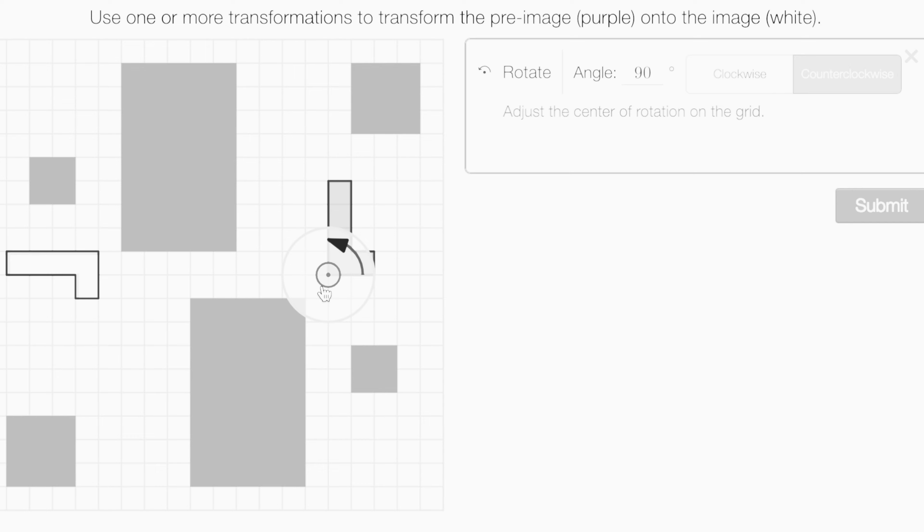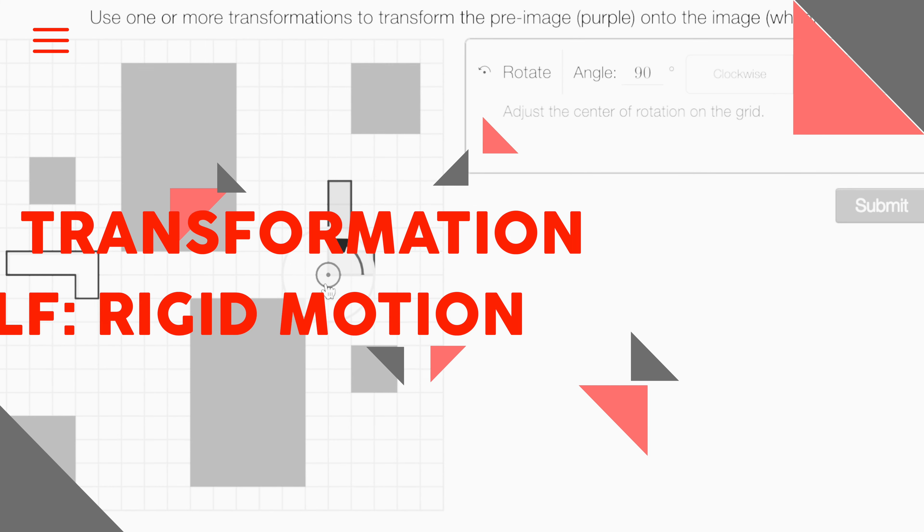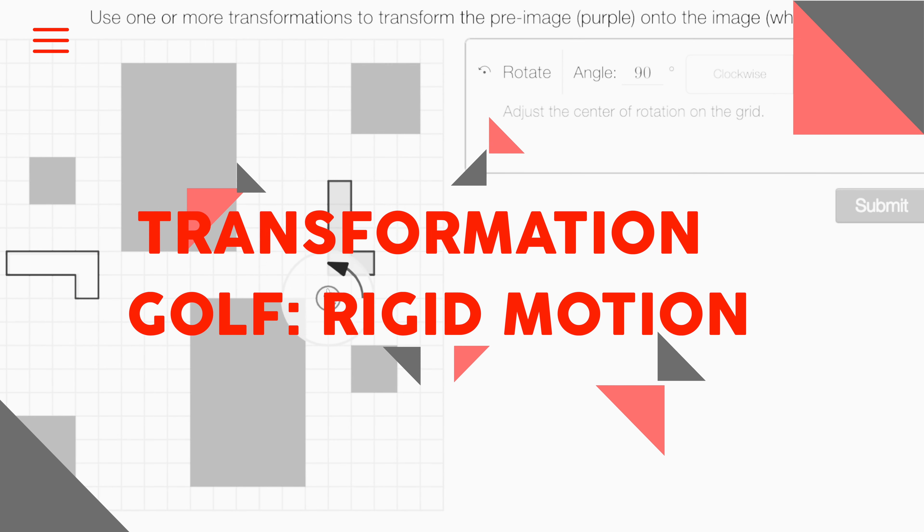Welcome to yet another episode of Dirty Math. My name is Matt, a.k.a. your Dirty Math teacher. Today we're covering Transformation Golf — rigid motion. There's a non-rigid motion version too, but this is the rigid motion one.